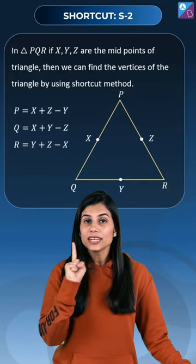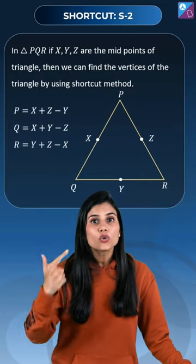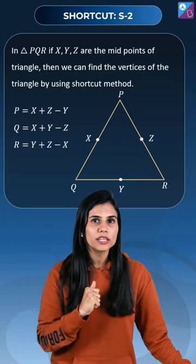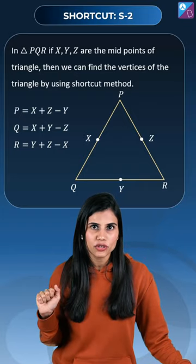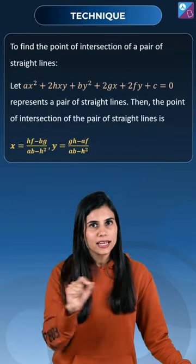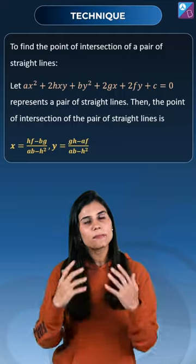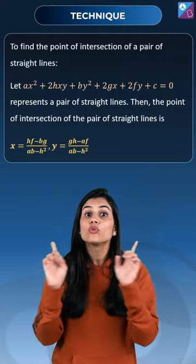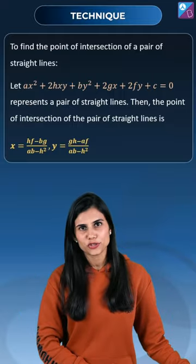Number five: this shortcut helps you to write the coordinates of the vertices using the coordinates of the midpoints of the sides of the triangle. And last is a technique to write the point of intersection of two lines whose combined equation is provided to you.